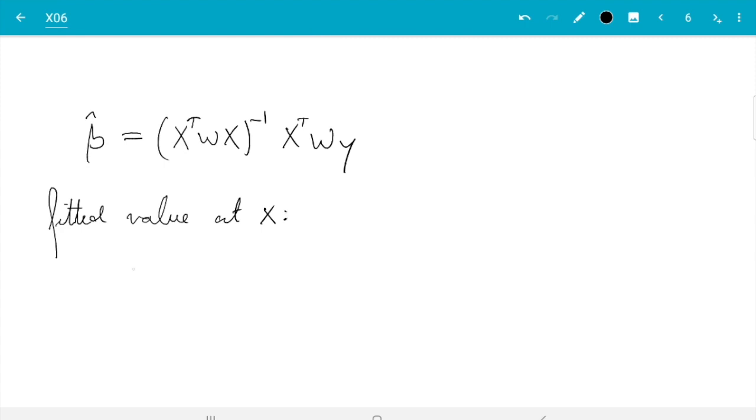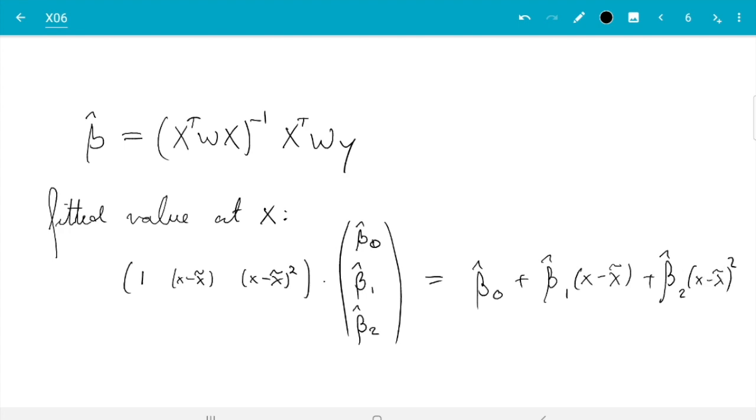So let's first write the general formula. So at x we have 1, x minus x twiddle, x minus x twiddle squared times beta hat zero, beta hat one, beta hat two, which is beta hat zero plus beta hat one times x minus x twiddle plus beta hat two times x minus x twiddle squared. Good, and now I hinted at this already, we need x equals x twiddle, and then this goes away because x minus x twiddle is zero. That goes away, so what we get is just beta hat zero.